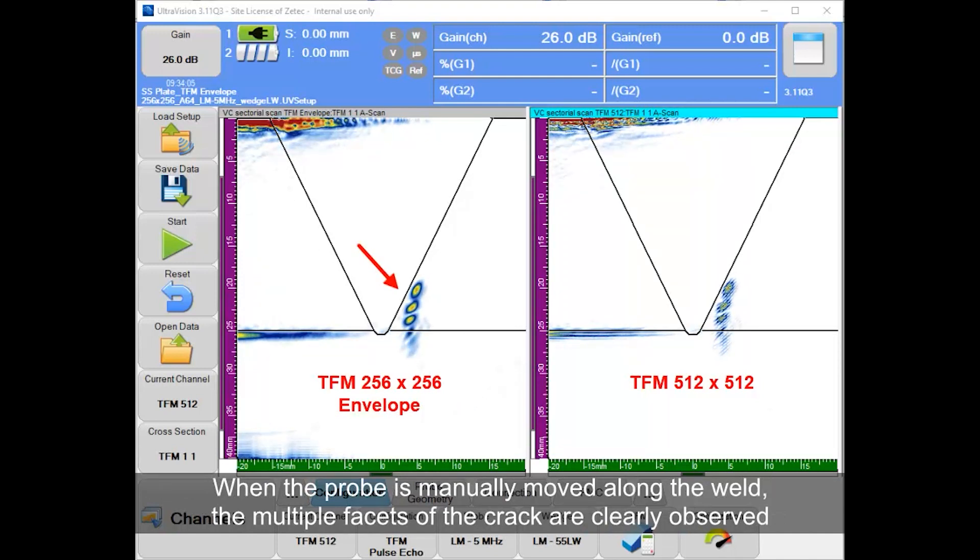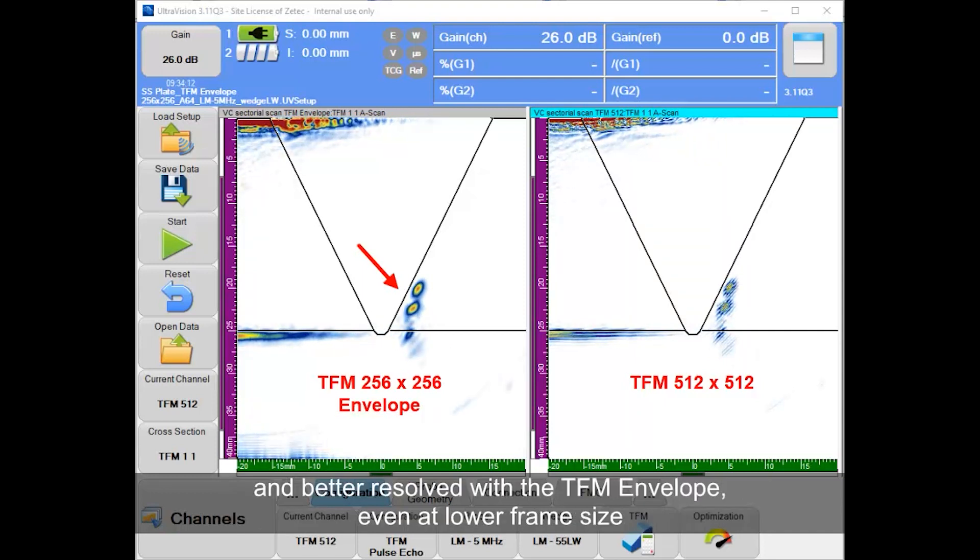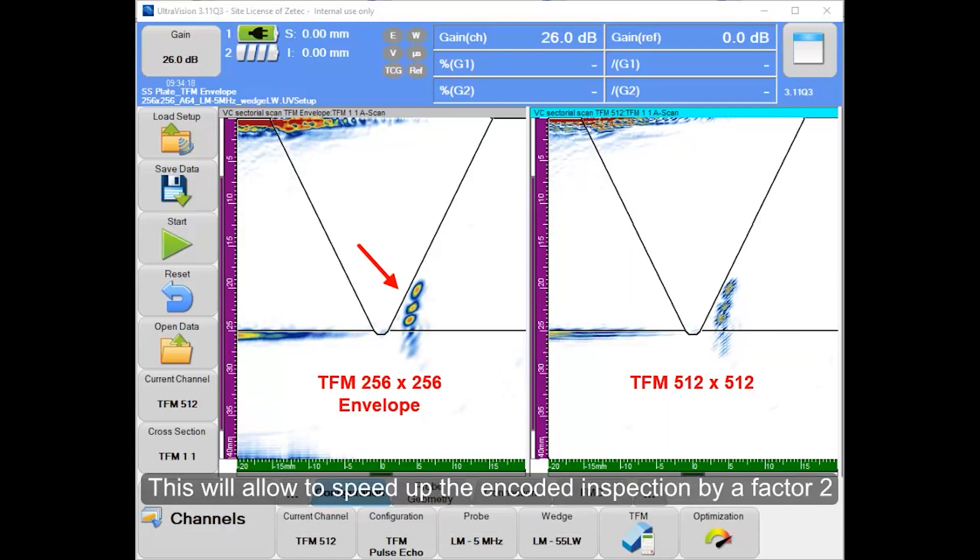When the probe is manually moved along the weld, the multiple facets of the crack are clearly observed and better resolved with the TFM envelope, even at lower frame size. This will allow speeding up the encoded inspection by a factor of 2.